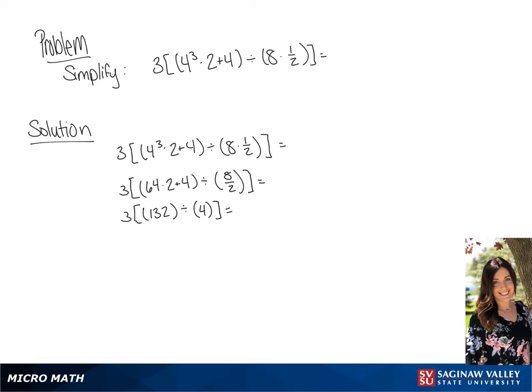So we have 3 times 132 divided by 4. So we can simplify what's in the brackets. We get 33 in the brackets times 3, which gives us our final answer of 99.